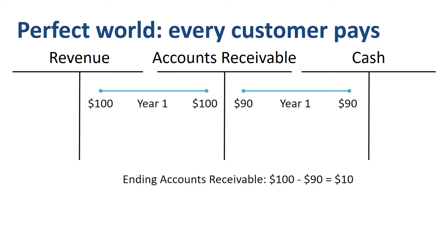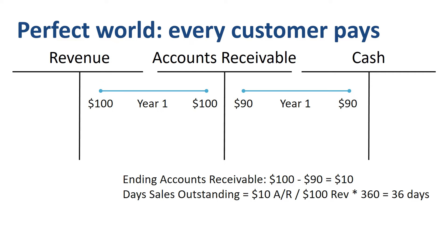In the management reporting of company ABC, the days sales outstanding metric — how long it takes on average for a customer to pay — would be the outstanding accounts receivable balance of $10 divided by full year revenue of $100 times 360 days, which is 36 days DSO. Maybe the terms in contracts with customers are 30 days, and customers are on average 6 days late in paying, but every customer pays in the end.